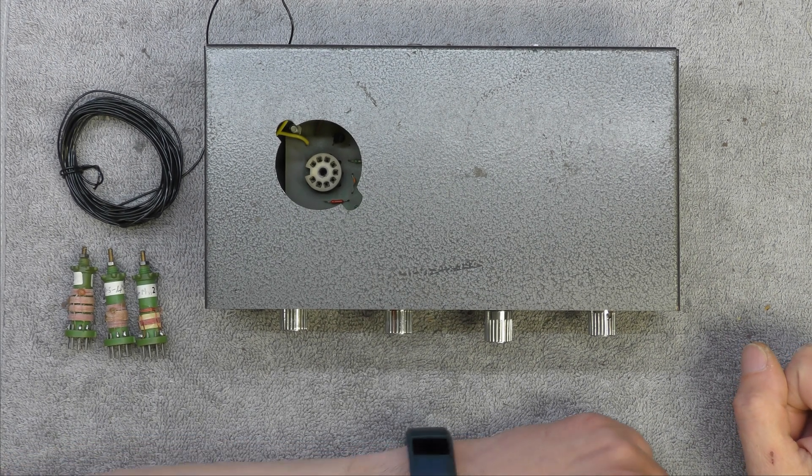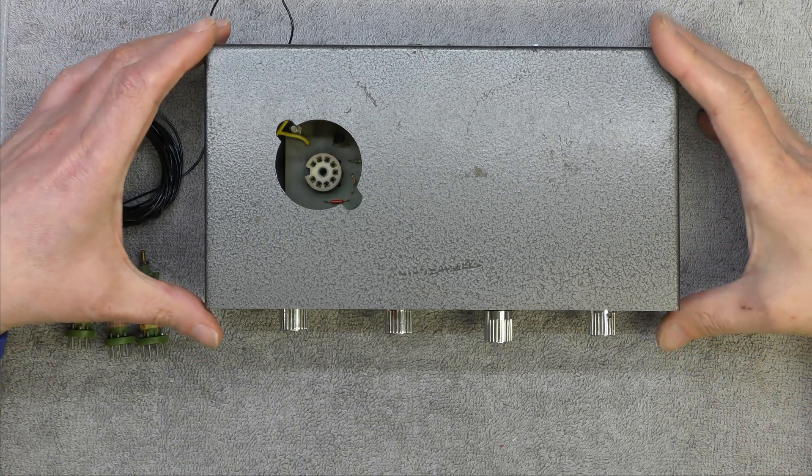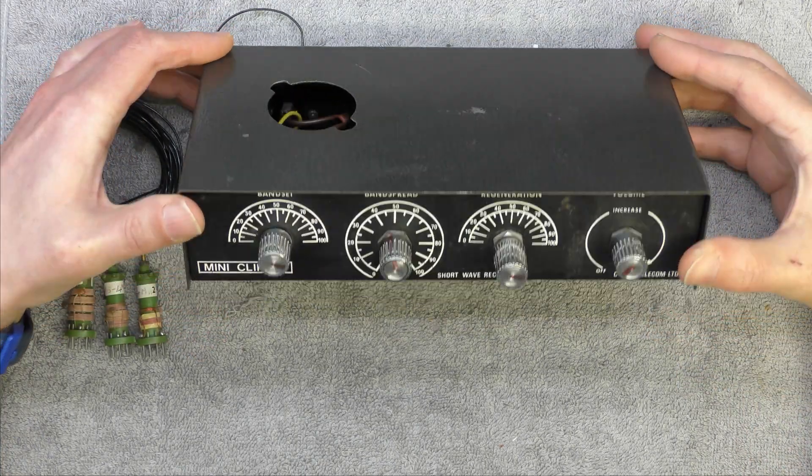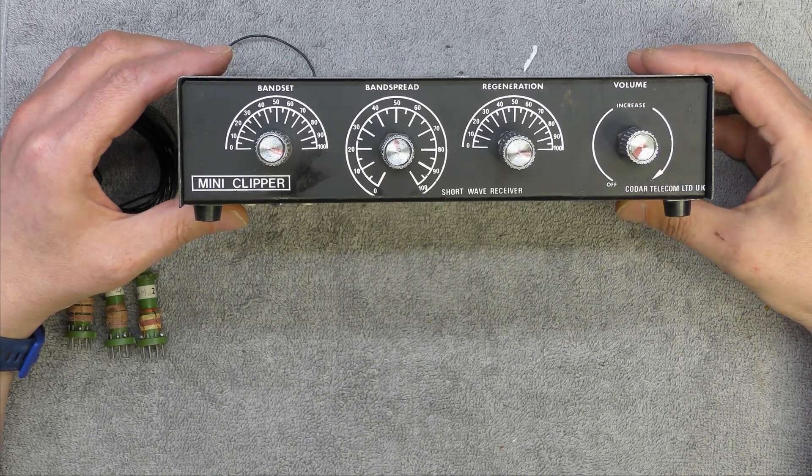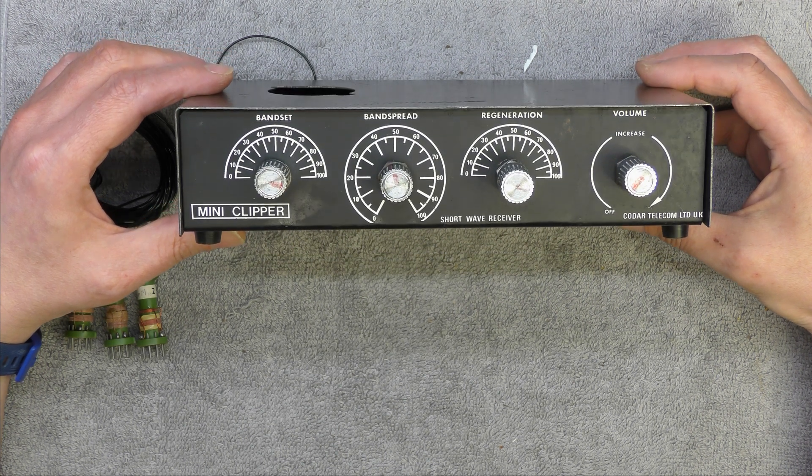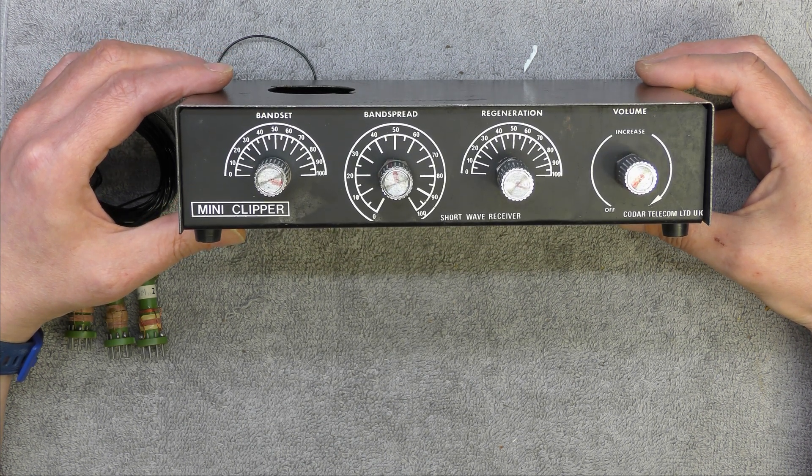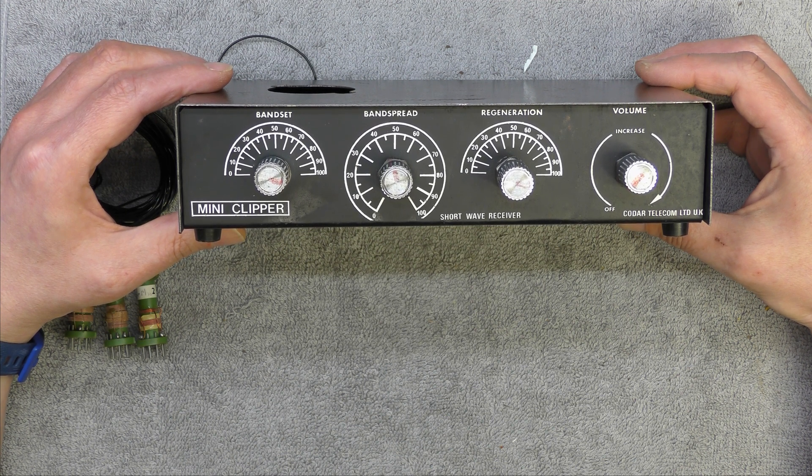Hi, I'm Daz. On the bench today is another piece of Kodar equipment - the Kodar Mini Clipper. I believe this one is from about 1976. It's all transistor, and the previous one I believe had a valve in from the circuit diagram I found.